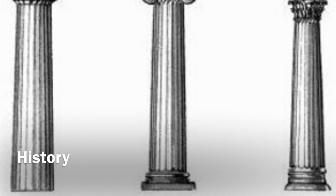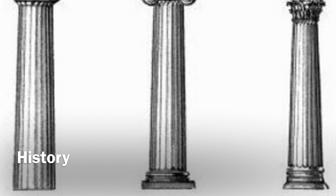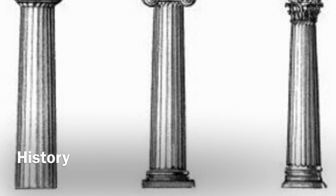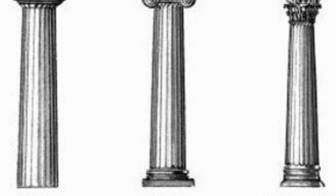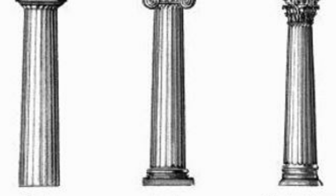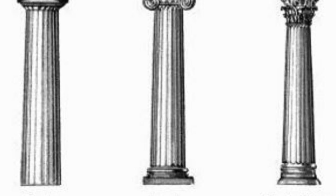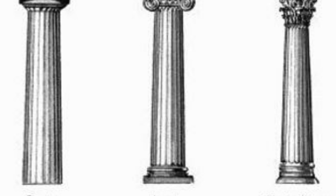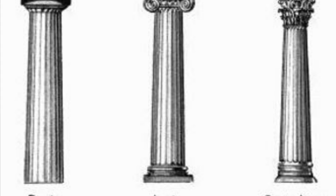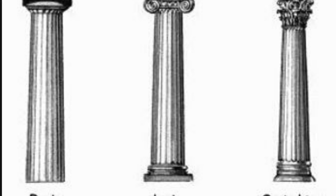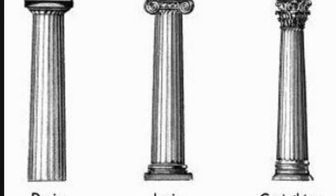Greek temples were sacred spaces, created to honor the gods and goddesses of Greece. The Greeks developed the architectural system called orders, each with their own distinctive proportion and detailing. The three different orders were the Doric, Ionic, and Corinthian.